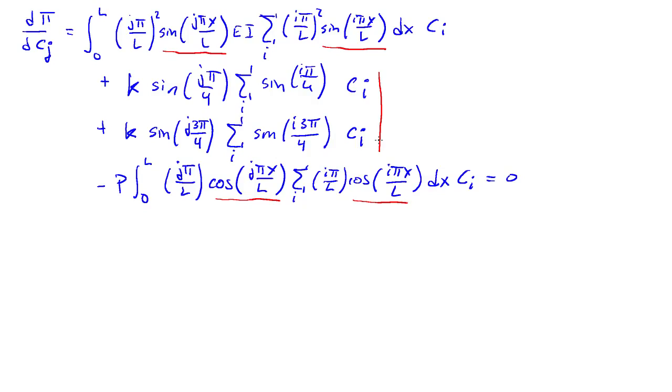And these two terms here are going to produce matrices that are full. We can clean things up by dividing through by EI over L cubed, and that will make things a little bit easier. If we do that, the first term is going to produce a diagonal matrix whose entries are I to the 4th power.